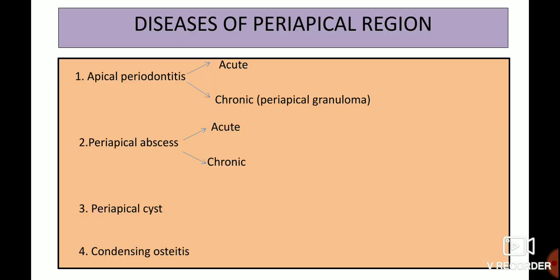Now let's have a short discussion about the diseases of the periapical region. First, apical periodontitis, which can be in either acute or chronic form. In chronic form it is also called periapical granuloma. Secondly, periapical abscess, again in either acute or chronic form. Then periapical cyst, and lastly condensing osteitis.